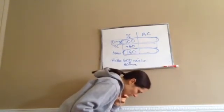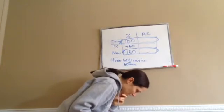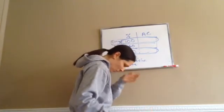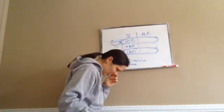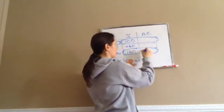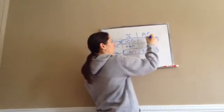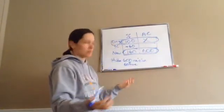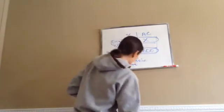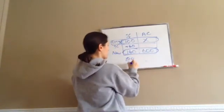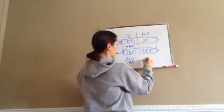Now, it says this. Bo and Christy hide 600 raisins. And this 600 raisins is 60% more than they hid. So the 600 raisins are the new. So how many raisins did they hide originally or last month? So you just, again, we set it up like this. 100 over 160 equals X over 600.